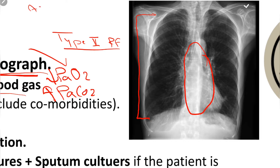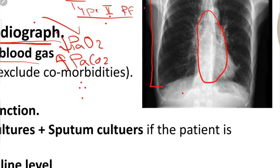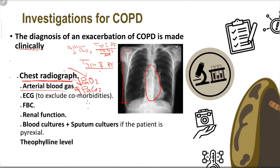Type 2 respiratory failure happens usually in COPD, while in asthma there is usually type 1 respiratory failure. In type 1 respiratory failure there is only a decrease in PaO2 while PaCO2 is normal. Another important thing to look for on the ABG is the pH. If the patient's pH is acidotic, it indicates more severe disease.